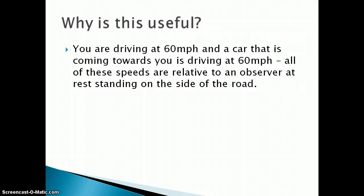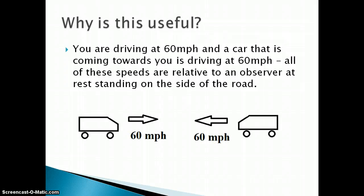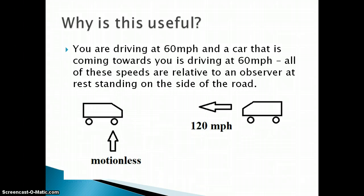Why is this useful? Let's say you're driving at 60 miles an hour and a car is coming towards you at 60 miles an hour and these speeds are relative to an observer standing on the side of the road. Well, there's nothing wrong with saying you're motionless and that car is coming at you at 120 miles an hour.